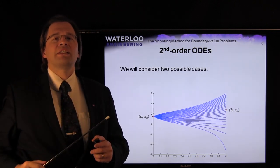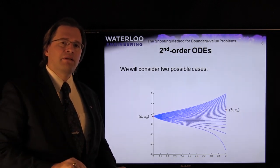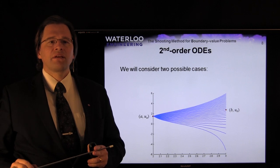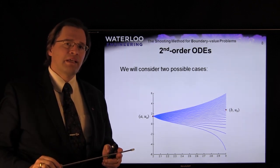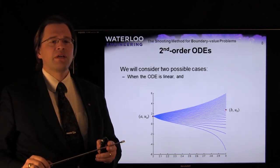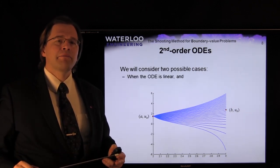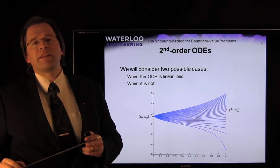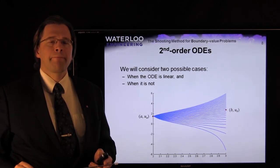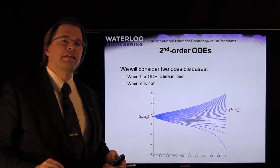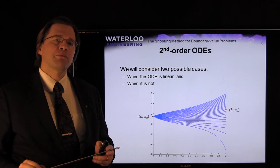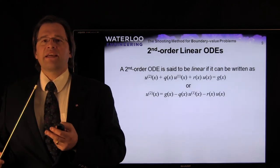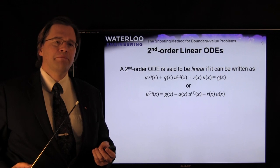Our goal is to find the solution such that, starting with the correct initial slope, it passes through our second boundary value at x = b. We can do this in two ways: a simpler technique for linear ODEs, and a more difficult technique for non-linear ODEs.